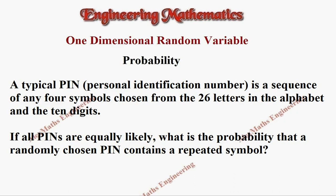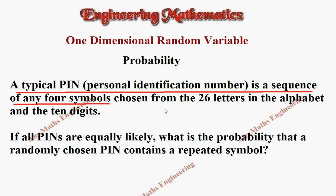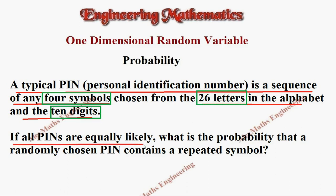Hi students, this is Alex. In this problem, a typical PIN — personal identification number — is a sequence of any four symbols chosen from 26 letters in the alphabet and 10 digits. The question asks: if all PINs are equally likely, what is the probability that a randomly chosen PIN contains a repeated symbol?